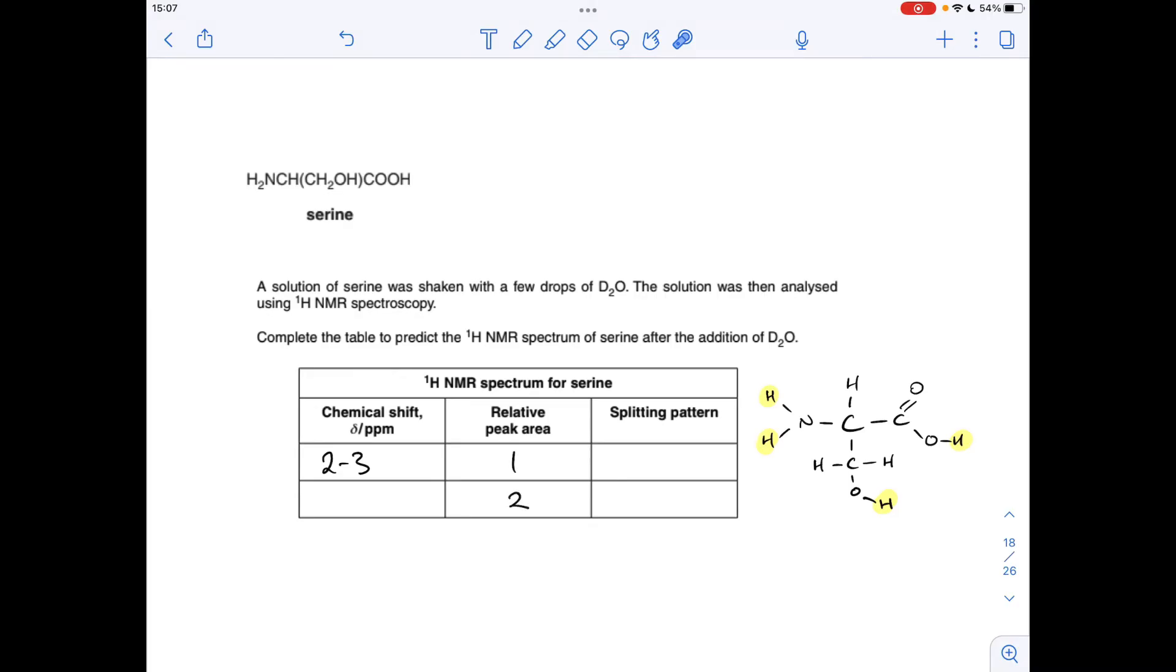And the splitting pattern. So, we're looking at what this is adjacent to. So, the signal for this will be split by these two. So, we're using the n plus 1 rule. 2 plus 1 is 3. So, we're going to see a triplet.